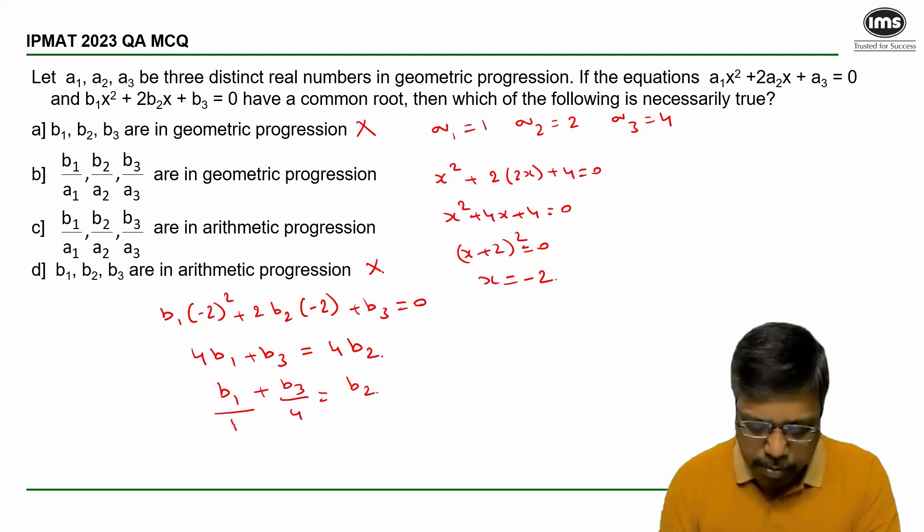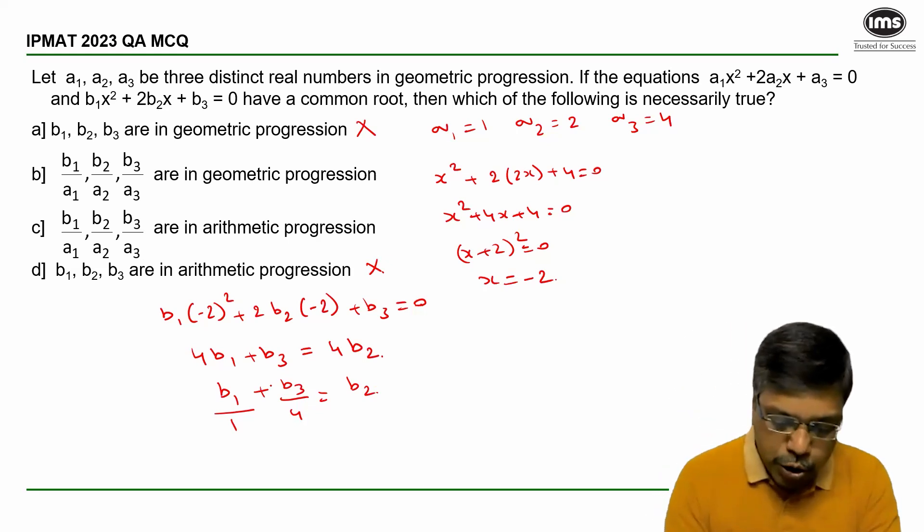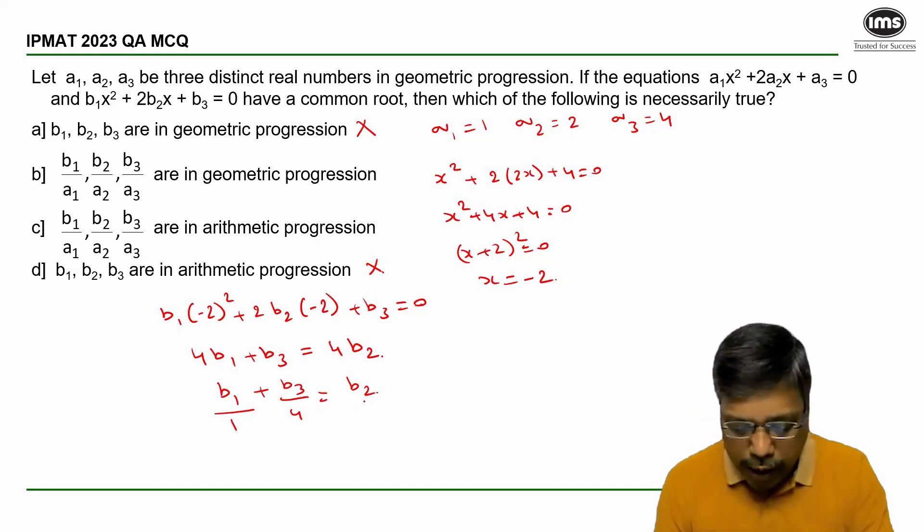Now B1/A1 - so 1 corresponds to A1. B3/4 - 4 corresponds to A3. So if I can somehow write A2 below B2,